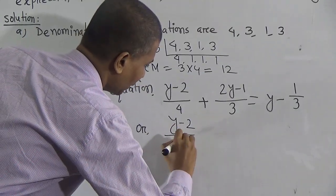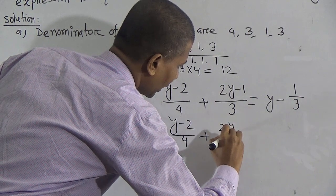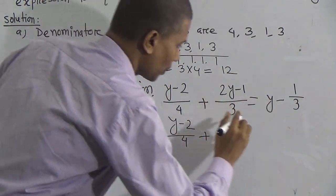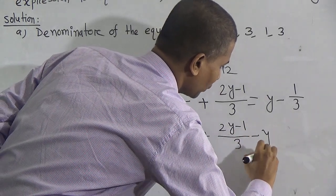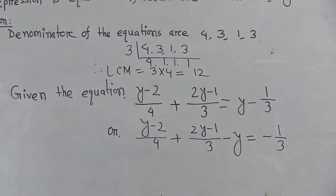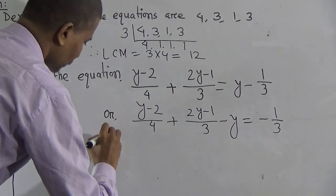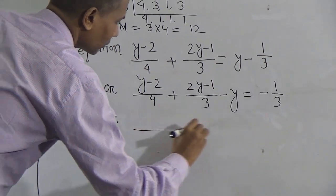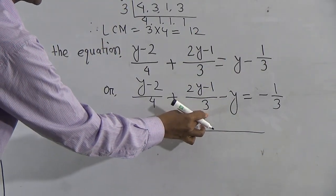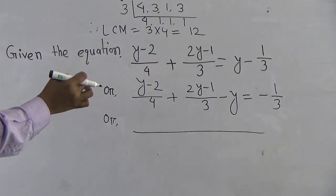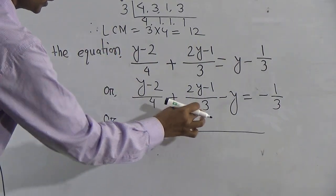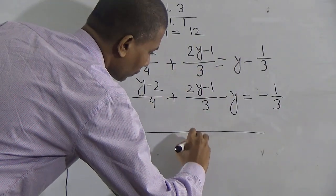We have y minus 2 by 4, plus 2y minus 1 by 3 on the variable side. I transpose here: y equals minus 1 by 3 on the right side. The denominators here are 4, 3, and 1 — there is an implied 1 present. So the LCM of 4, 3, 1 is 12.